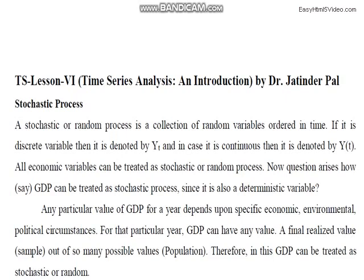The first topic under consideration is the stochastic process. A stochastic or random process is a collection of random variables ordered in time — it is basically a time series. If it is a discrete variable, you denote it by Y_t, and if it is a continuous variable, you write it as y(t) within brackets. All economic variables can be treated as a stochastic random process, for example GDP.